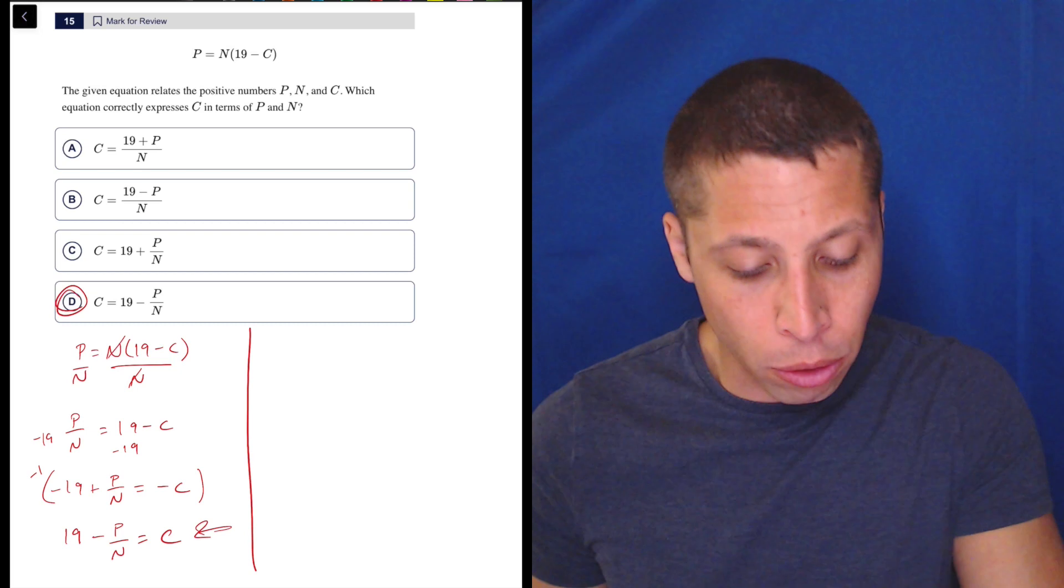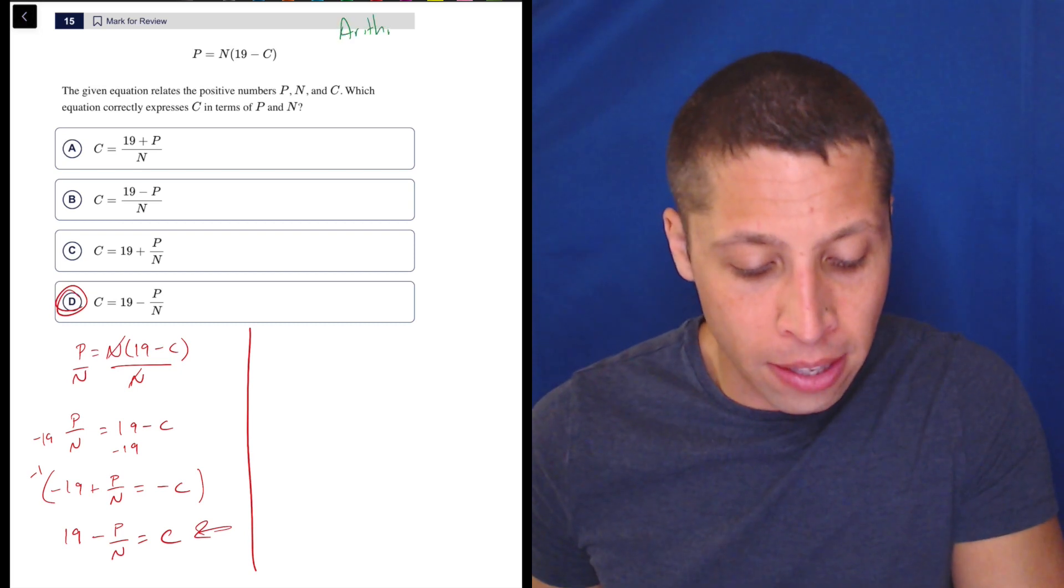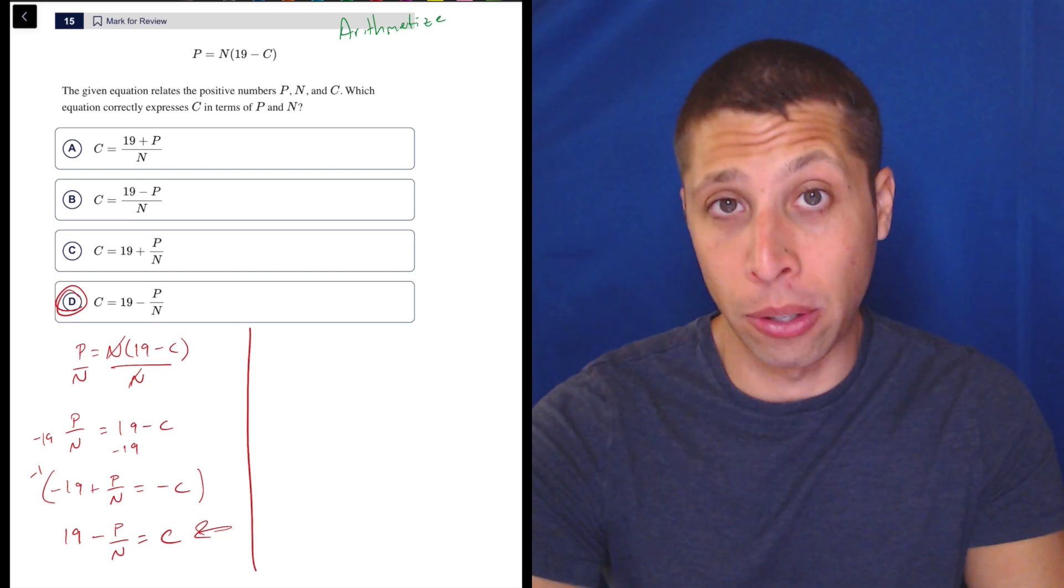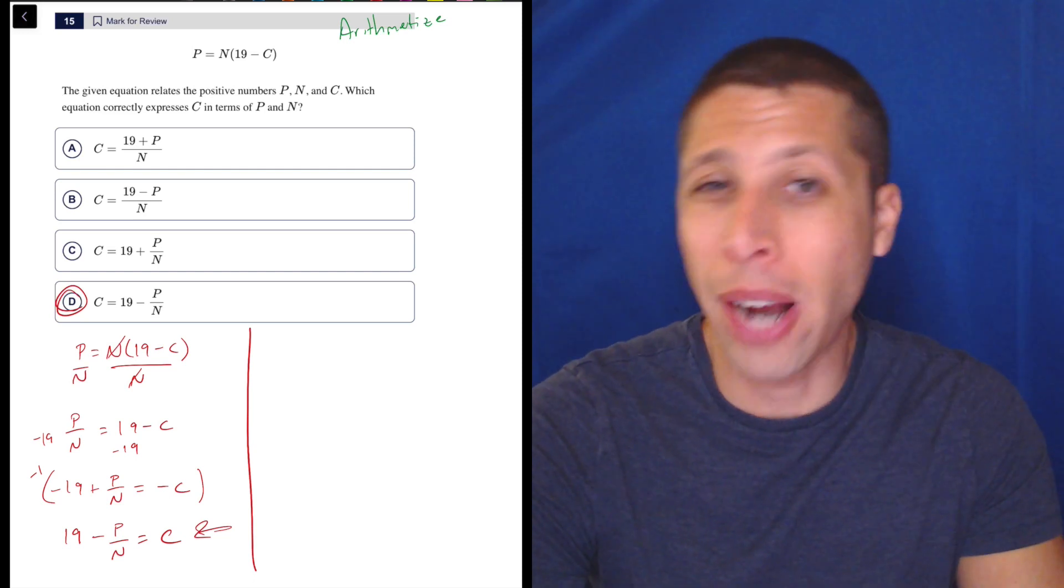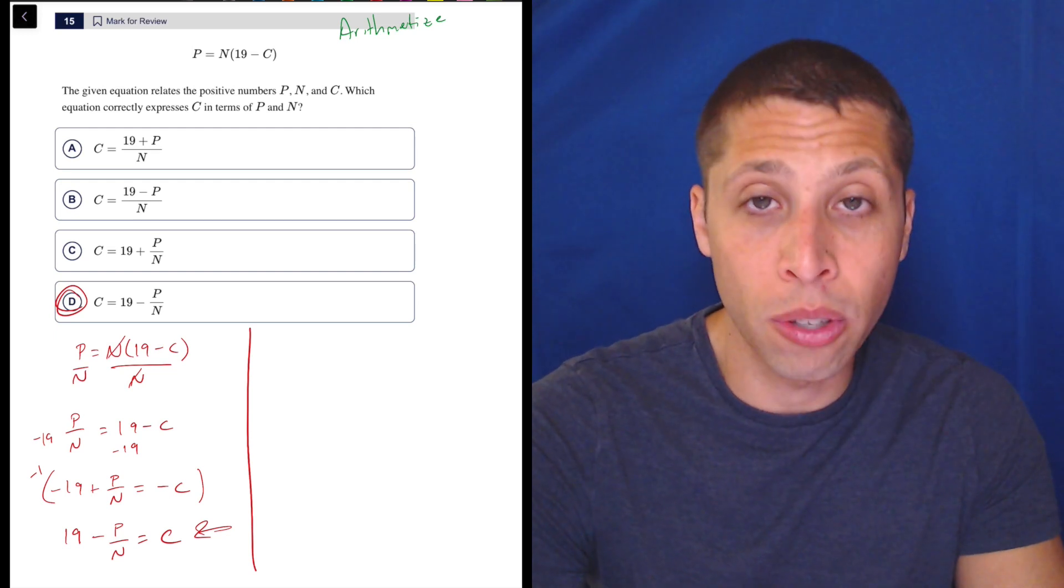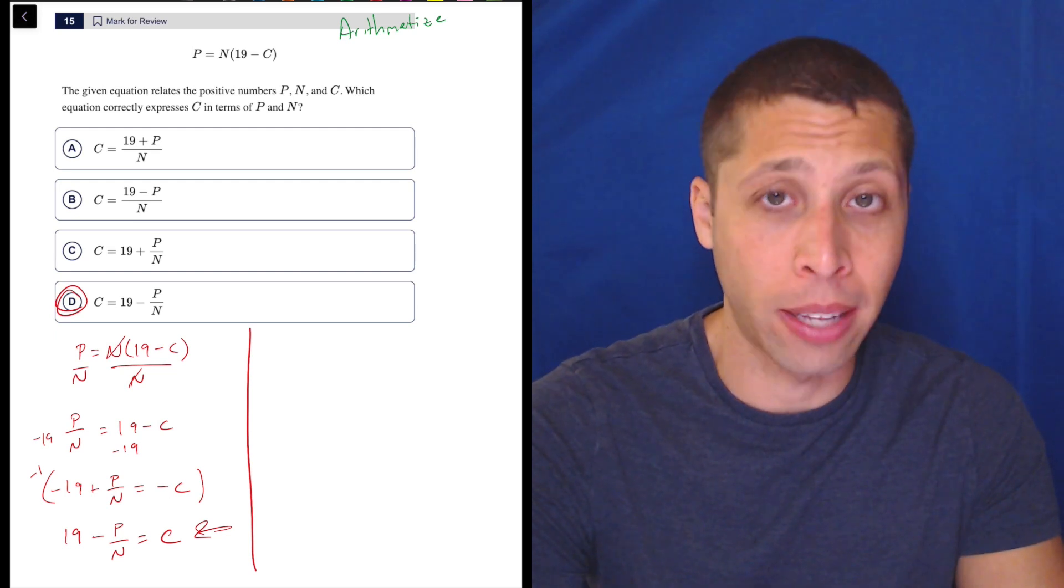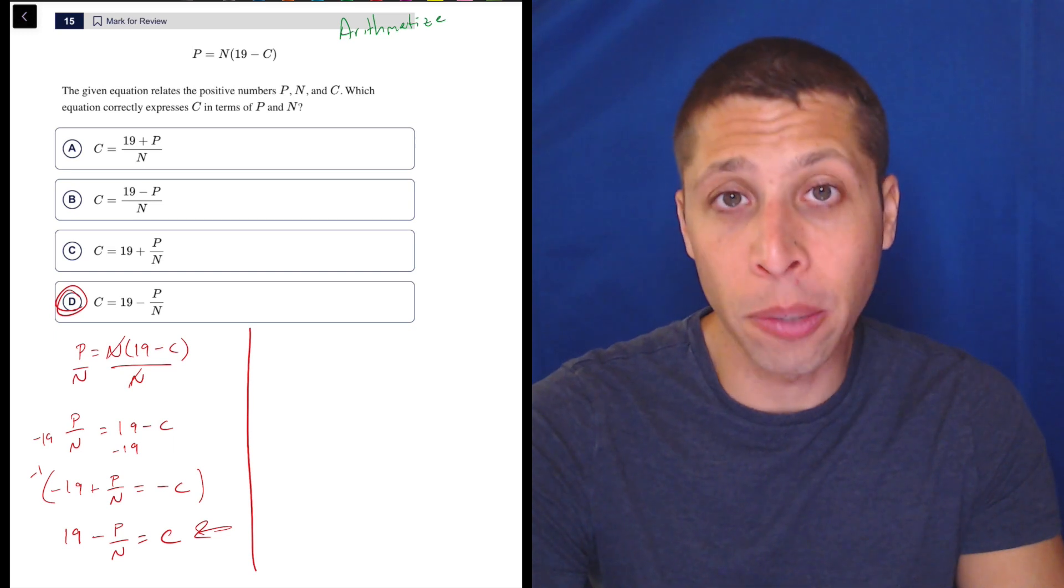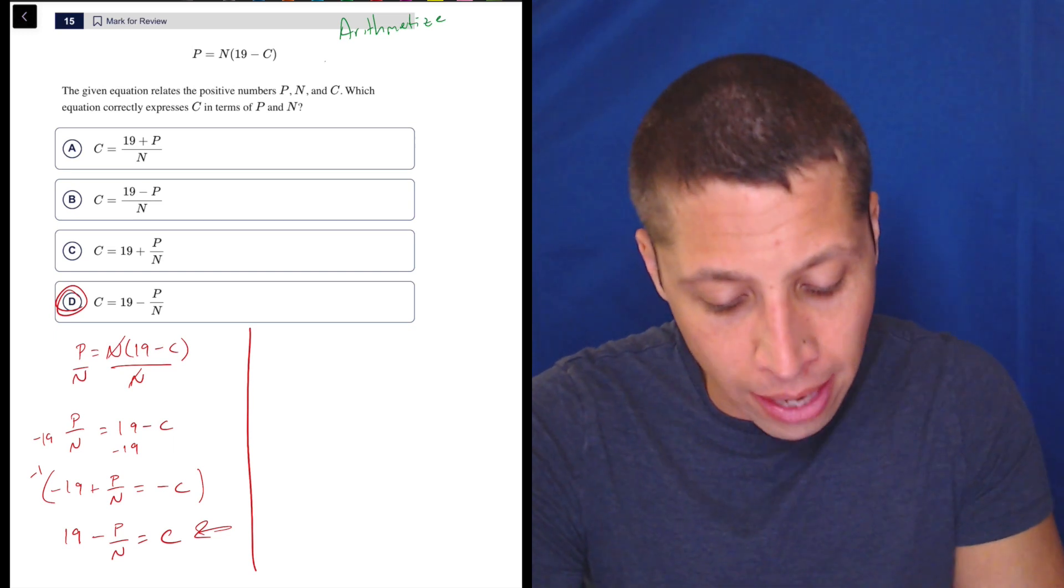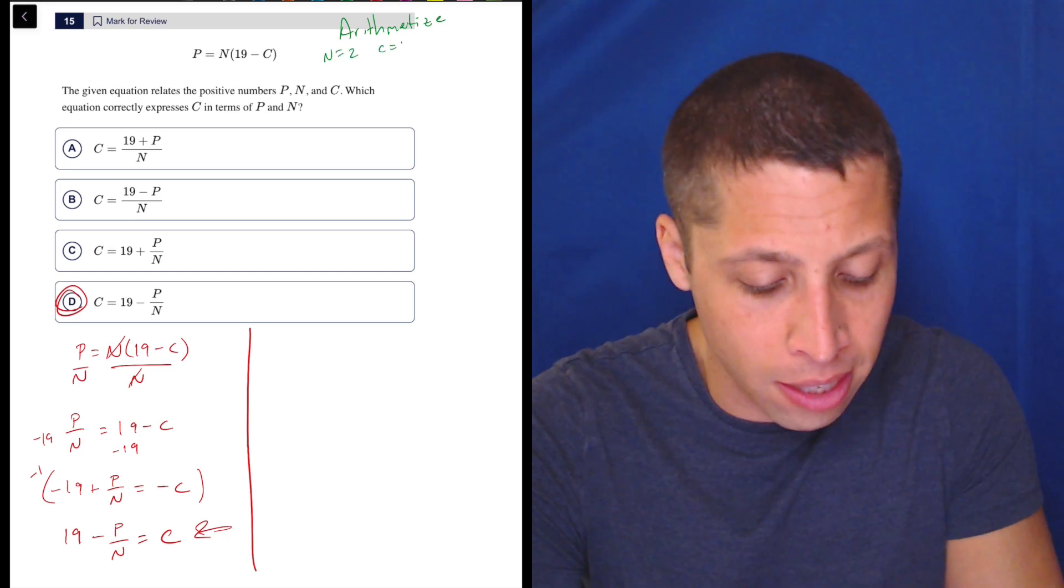Here's what we're going to do. We're going to arithmetize because in this case, we can't really plug this into Desmos easily because there are three variables. If it was just two, we could pretend they were X and Y. But here we would need to deal with the fact that there are three. And the best way to deal with that is to get rid of them entirely and just make up some numbers.